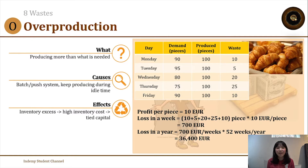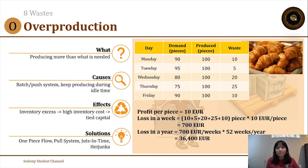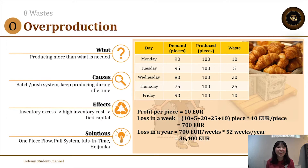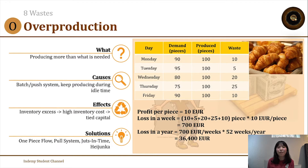That 30,000 euros is tied capital that could have been used for something else, like raw materials or quality improvements. The solutions for overproduction waste include one-piece flow, a pull system with just-in-time, or Heijunka. These lean tools will be discussed in more detail in another lecture.